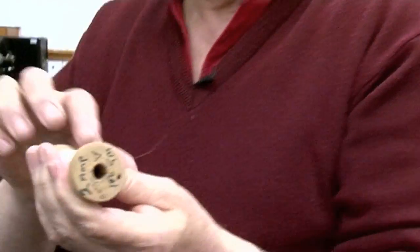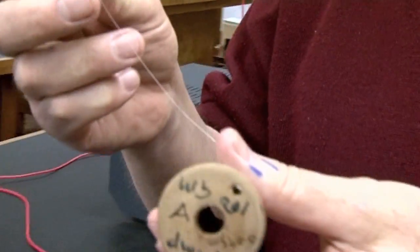This is 2-amp fuse wire. It's copper, tinned copper wire, which used to be used in old-fashioned fuses.